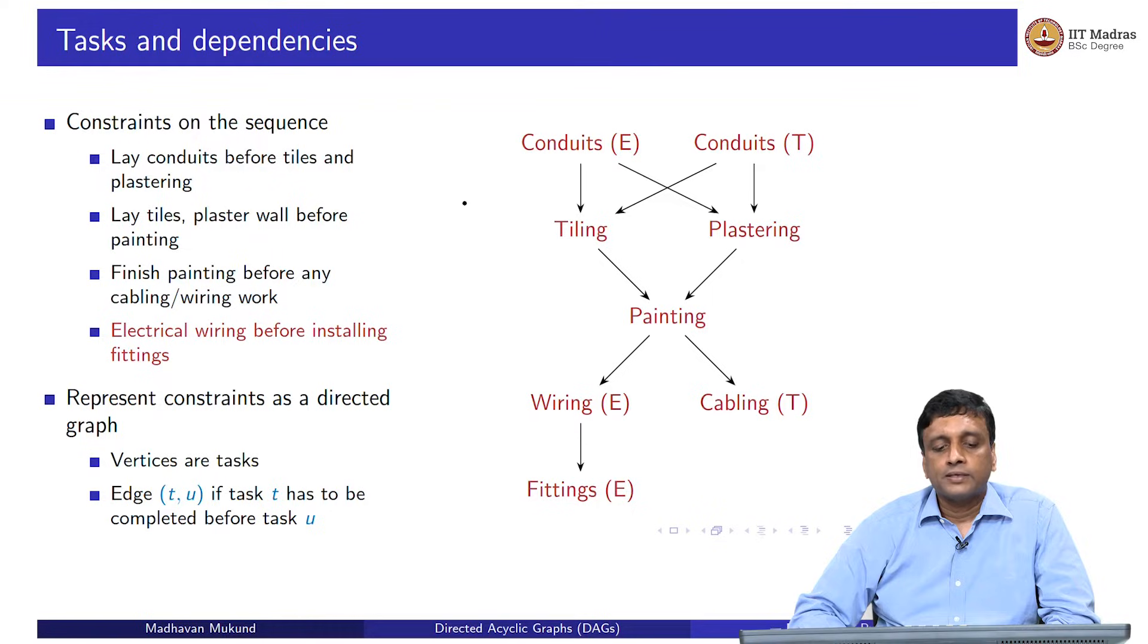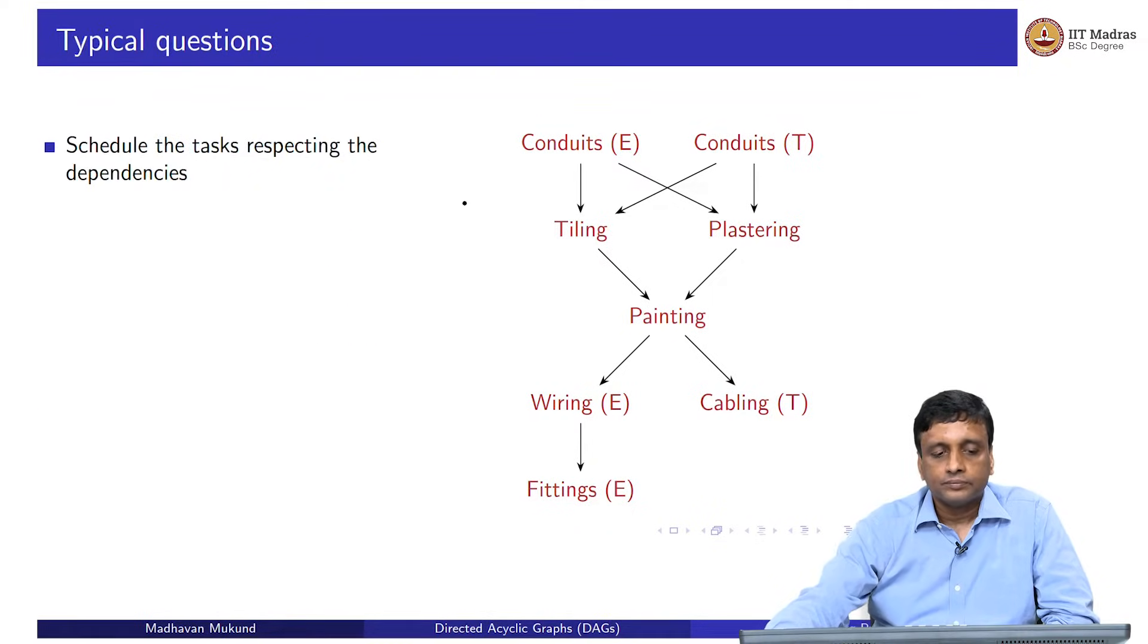This represents the constraints. This is a directed graph. And this directed graph should not have cycles. If it had cycles, it would mean that I have to do A before B, but I also have to do B before A. That would be an unrealizable thing.